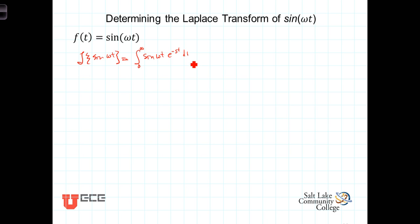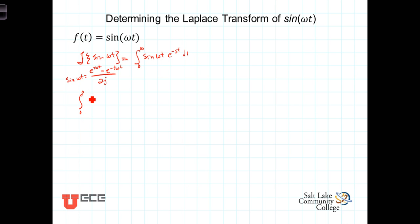From your Calc 2 class you probably remember that the way they taught you to do this integration was using integration by parts. But now that we know Euler's formula — the sine of omega t is equal to e to the j omega t minus e to the minus j omega t, over 2j — we're going to use that identity to substitute in for sine of omega t. So our Laplace transform integral becomes the integral from 0 to infinity of e to the j omega t minus e to the minus j omega t, with the constant 1 over 2j brought out in front.